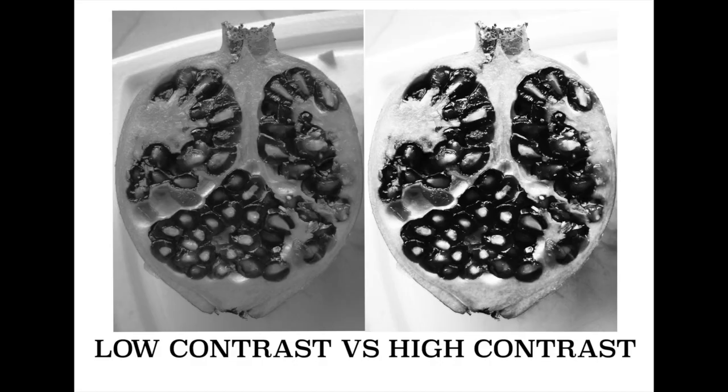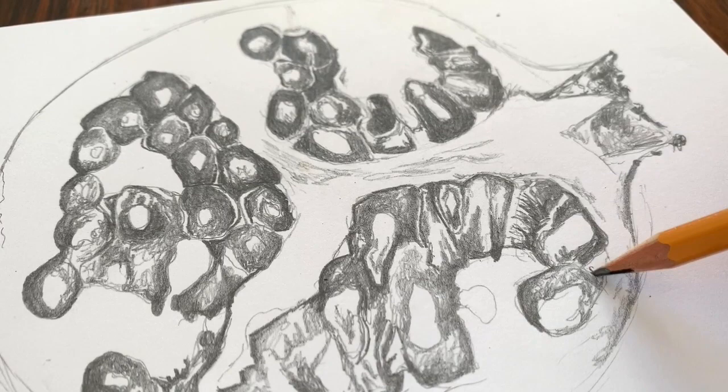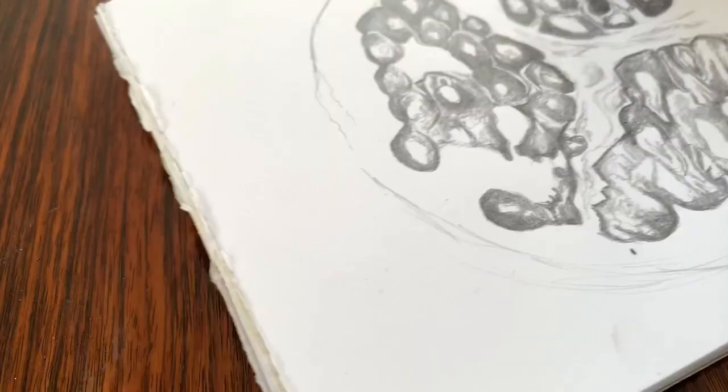Now I've toned in all of the seeds, I'm starting to add in those little marks that are in the white areas of the flesh of the pomegranate. If I'd added loads of tone to this already, I wouldn't be able to show this mark making in detail, so it's really important that you keep that contrast high.